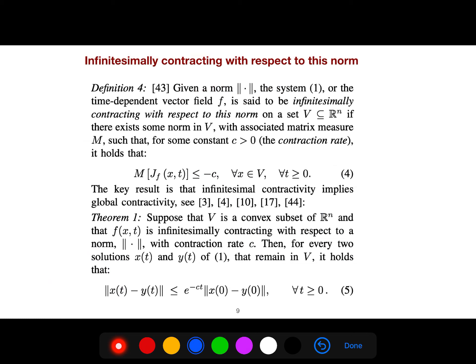There is a good, important definition that we say that the system is said to be infinitesimally contracting with respect to this norm on a set V if there exists some norm in V and the associated matrix measure such that for some constant, this holds.